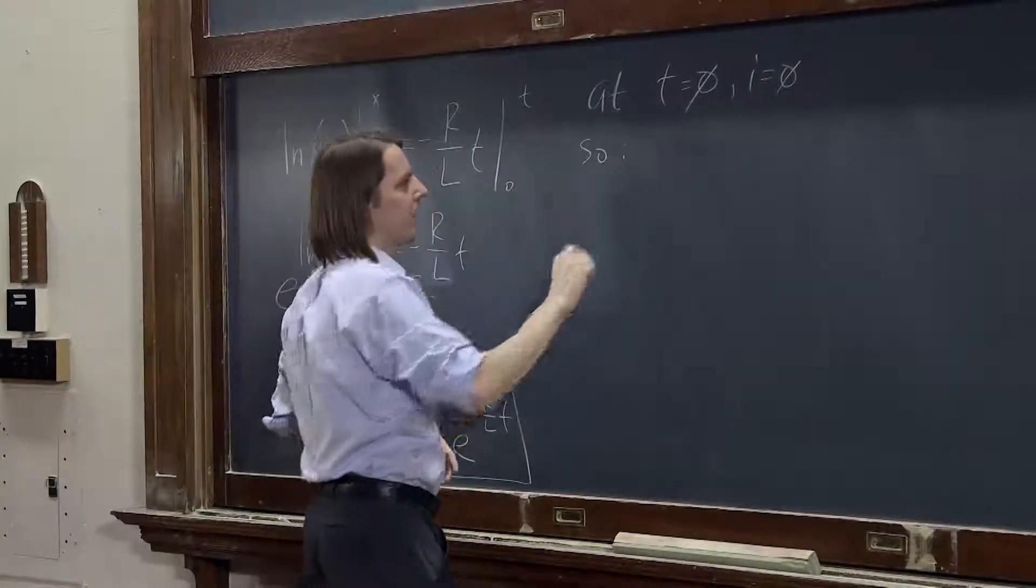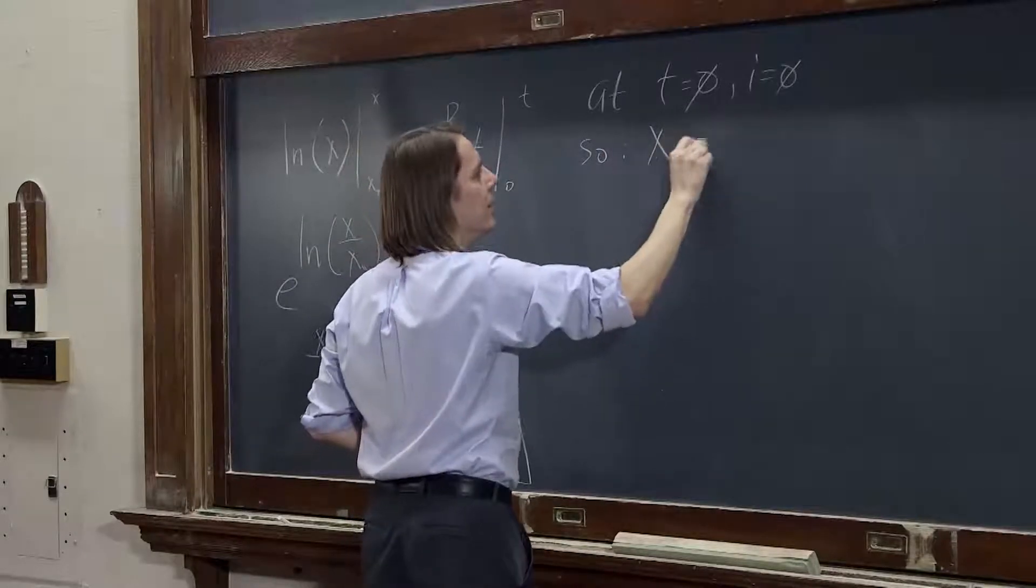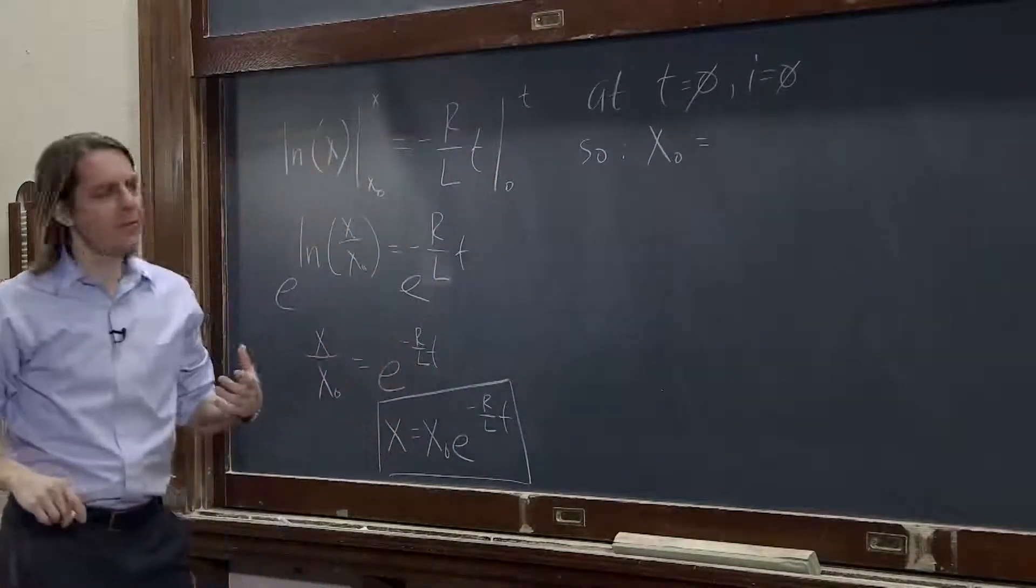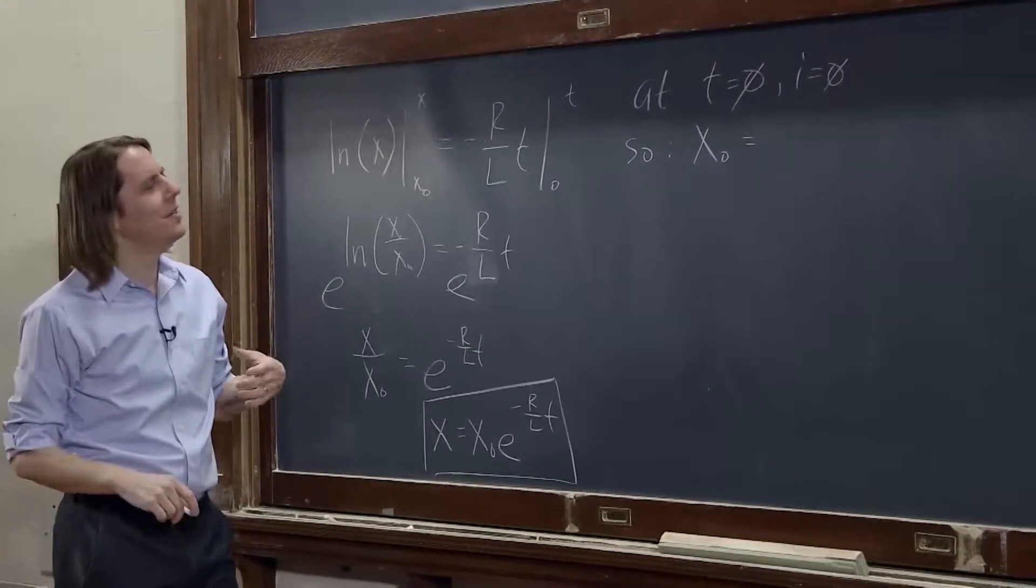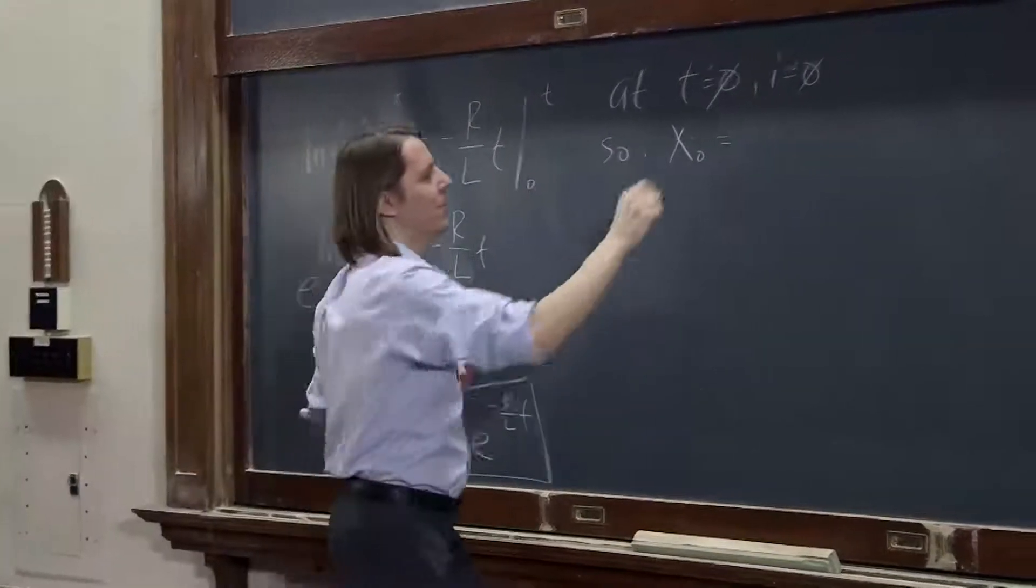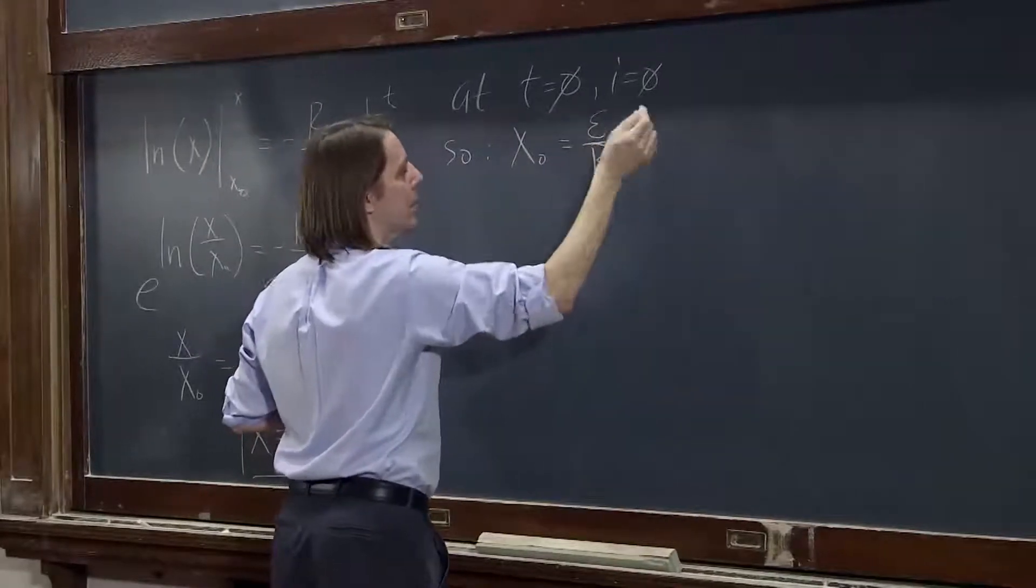So that tells us what x naught is. If x is the emf minus i over r, I'm sorry, if x is the emf over r minus i, then x naught would be the emf over r minus nothing.